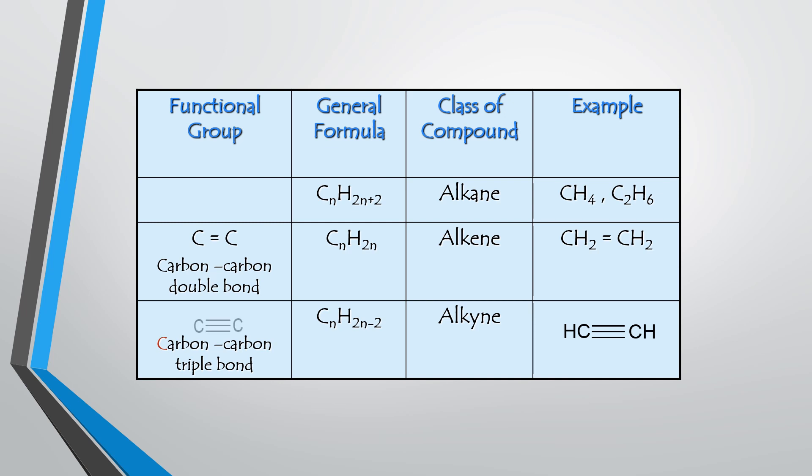Basically there are 15 functional groups that you need to know and memorize. Alkane is not a functional group because it only contains single bonds of carbon and hydrogen, so there is no functional group for alkane. The first functional group is the carbon-carbon double bond, which belongs to the class of compound called alkene. The example given is ethene, with 2 carbons and 4 hydrogens, and the general formula for alkene is CnH2n.